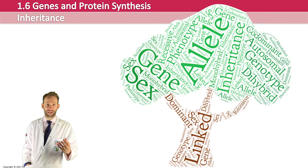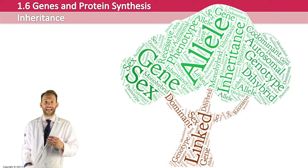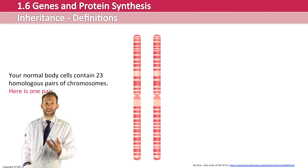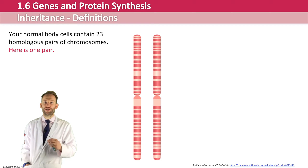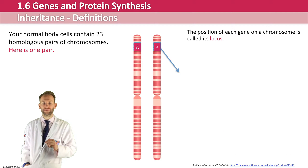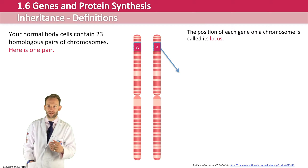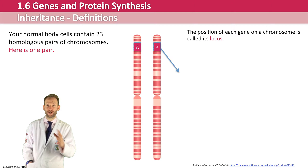This diagram shows a particular homologous pair of chromosomes — just one pair, where one has come from the mother and one from the father. In your cells you've got 23 pairs just like this. The position of each gene on a chromosome is known as its locus — that's its place on the chromosome. The same gene will be on the same locus for each of the homologous chromosomes, but the genes could be different alleles — different versions of the same gene.